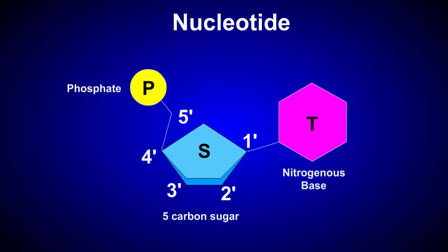The 5-carbon sugar present in DNA is deoxyribose, and the 4 nitrogenous bases are adenine, guanine, cytosine, and thymine.